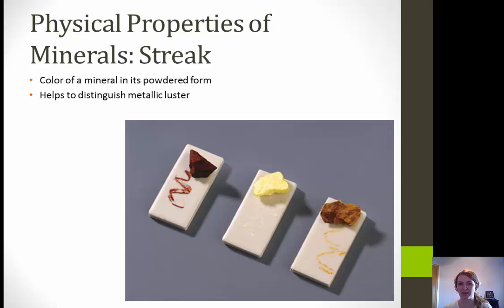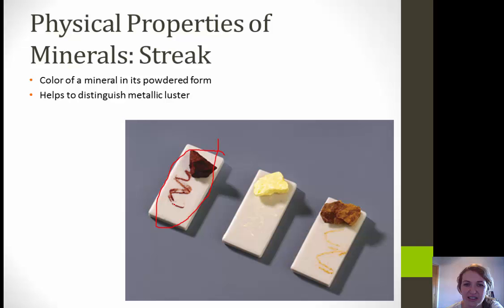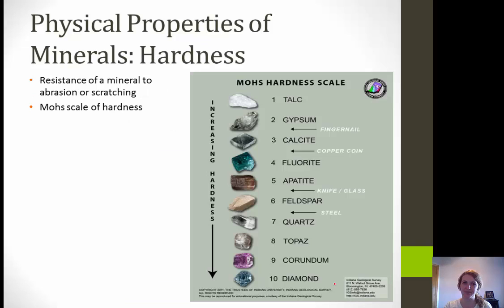Next is streak — the color of a mineral in its powdered form, which helps to distinguish metallic lusters. Metallic lusters typically have dark, dense color streaks, while non-metallic ones tend to have lighter ones. In this image, this sample is dark — I would say it has a red to brown dark streak. This one, which is most likely sulfur in the middle, you can barely make out its streak, and then you have this one over here that is an orangish color.